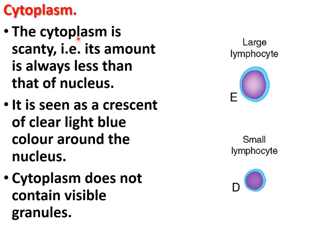The cytoplasm of lymphocytes is scanty, always less in amount than the nucleus. It is seen as a crescent of clear light blue around the nucleus. The cytoplasm does not contain any visible granules.